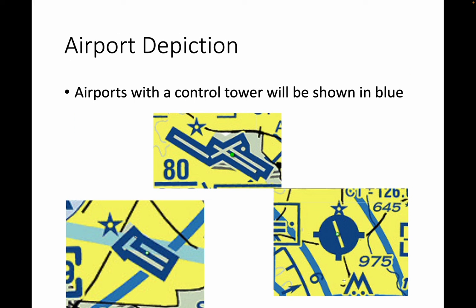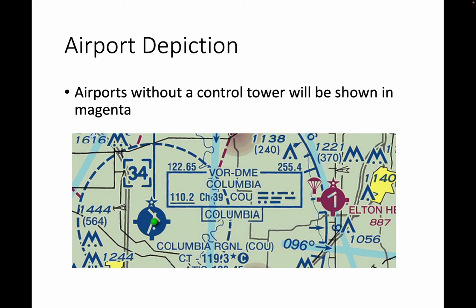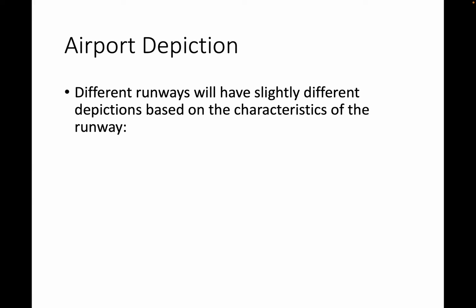Airports are a big deal on the charts. Airports with a control tower are going to be shown in blue, and there are three different representations. If the runway is less than a certain threshold in length, it'll be shown with a dot with the runway inside. If it's longer than that threshold, it'll just be shown as the runways themselves. Airports without a control tower are going to be shown in magenta. Here are two examples: Columbia Regional Airport and a smaller airport — the magenta airport has no control tower.